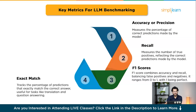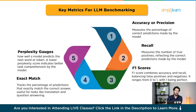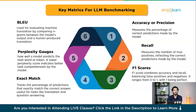The fourth metric is exact match, which tracks the percentage of predictions that exactly match the correct answer — especially useful for tasks like translation and question answering. The fifth is perplexity, which gauges how well a model predicts the next word or token; a lower perplexity score indicates better task comprehension. The sixth is BLEU — Bilingual Evaluation Understudy — used for evaluating machine translation by comparing n-gram sequences between the model's output and human-produced translations.